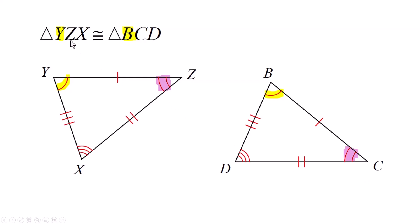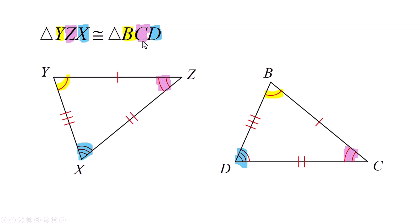Z has two marks and it's congruent to C, which also has two marks. So Z and C will be in the same position. You have to make sure Z and C are sitting in the same position among the three letters. Then you have X and D. So when you read the congruency statement, even without the diagram, you'd know: angle Y is congruent to angle B, angle Z to angle C, and angle X to angle D.